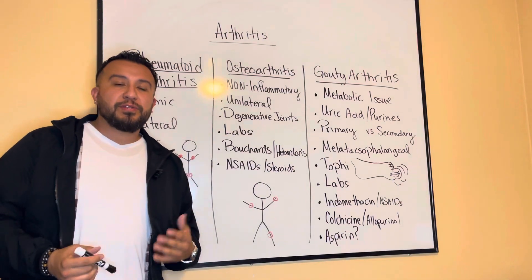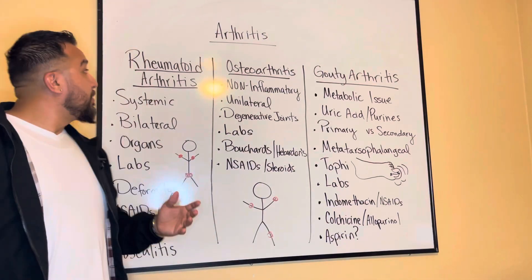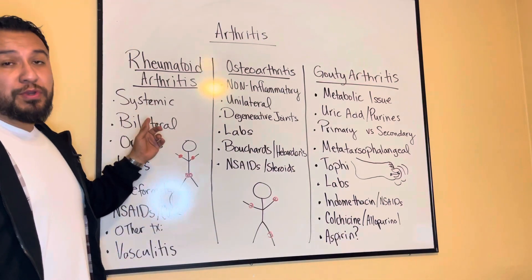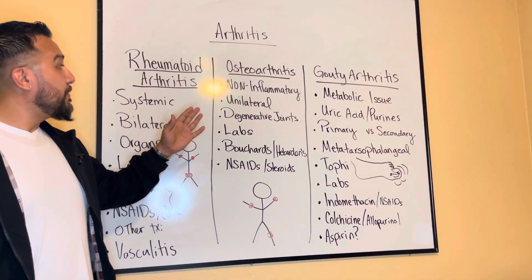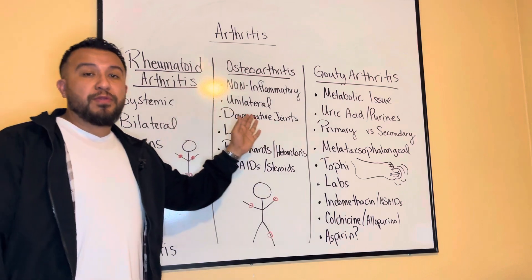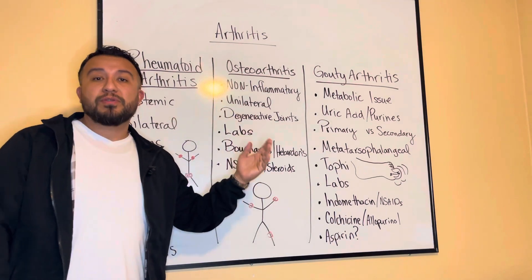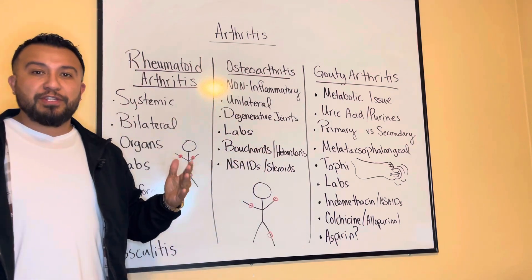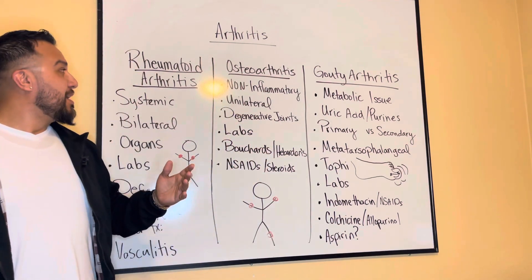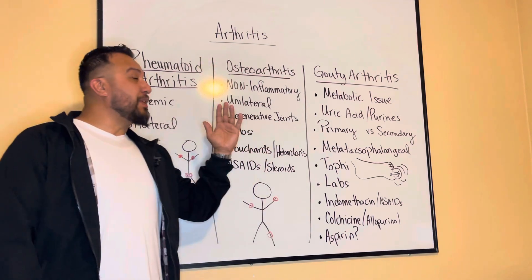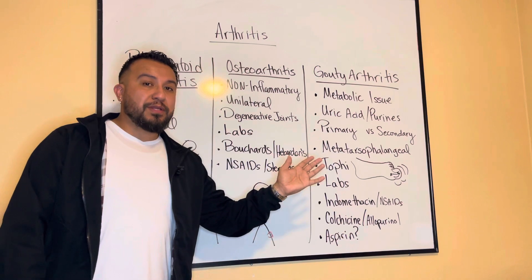When it comes to arthritis, there are three major types: rheumatoid arthritis, osteoarthritis — which is also known as degenerative joint disease — and gouty arthritis.